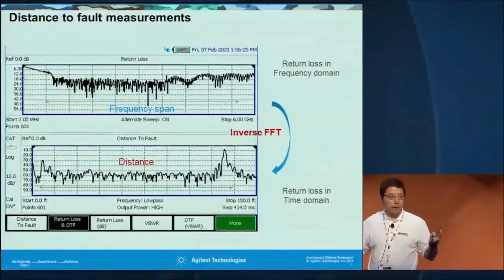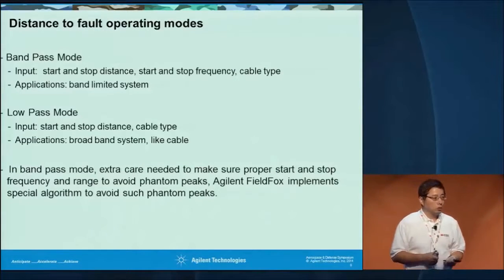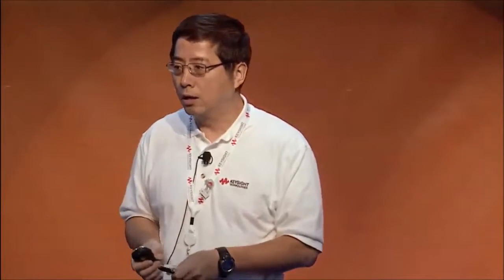That introduces an interesting aspect: your frequency span setup is related to the result you'll get. There are two types of modes — low-pass mode and band-pass mode. Band-pass mode is used when you have a band-limited device in your system. For example, if you try to share one cable across multiple bands, you'll have a multiplexer — sometimes called a duplexer or triplexer — which are band-limited devices. If you sweep broadband on such a system, you'll get a big peak and won't make a good measurement. In those situations, the frequency setup must be limited by the filter you have.